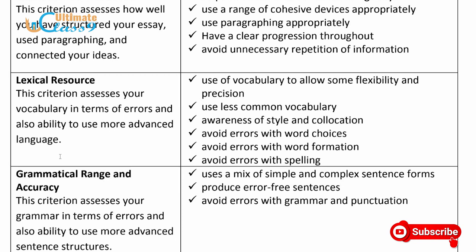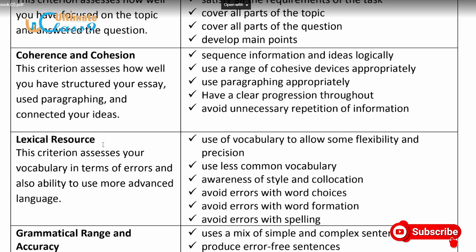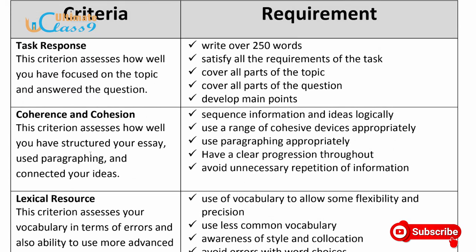And then Grammatical Range and Accuracy — are you able to structure your sentences in a grammatically correct way? Your subject-verb agreement, your tenses — are they on point? They look at all this. These are basically the four criteria they look for to give you the required band score you need. If you're able to meet all these requirements, then you should be rest assured that you are getting the required band score you are aiming for.